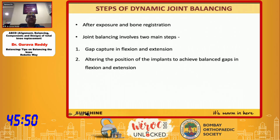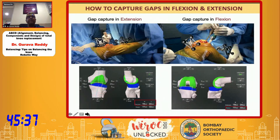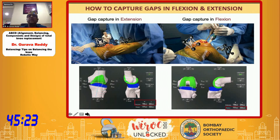The steps of dynamic joint balancing after exposure and bone registration: joint balancing involves two main steps. One is gap capture in flexion and extension, and two is altering the position of implants to achieve balance of gaps in flexion and extension. For gap capture in extension, we straighten the joint with arrays, and for gap capture in flexion, we put two osteotomes and lift it up. This is still a somewhat crude way of doing these captures, but tensioners are coming and will make it more scientific within a year.